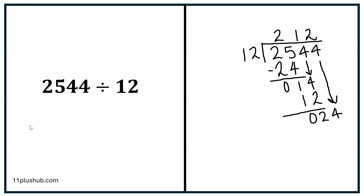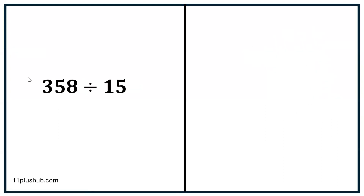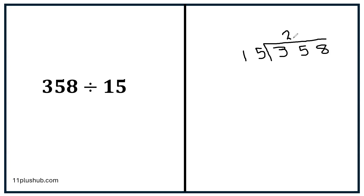So let's do another one, just so it's clear. This time we've got 358 — draw our bus stop, 358, and we're dividing it by 15. How many times does 15 go into 35? Well, 15 times 2 is 30, so it goes twice. We land on 30, so that goes underneath. And then this turns into column subtraction: 5 subtract 0 is 5, 3 subtract 3 is 0. And that 8 comes down. So we've got a new number here: 58.